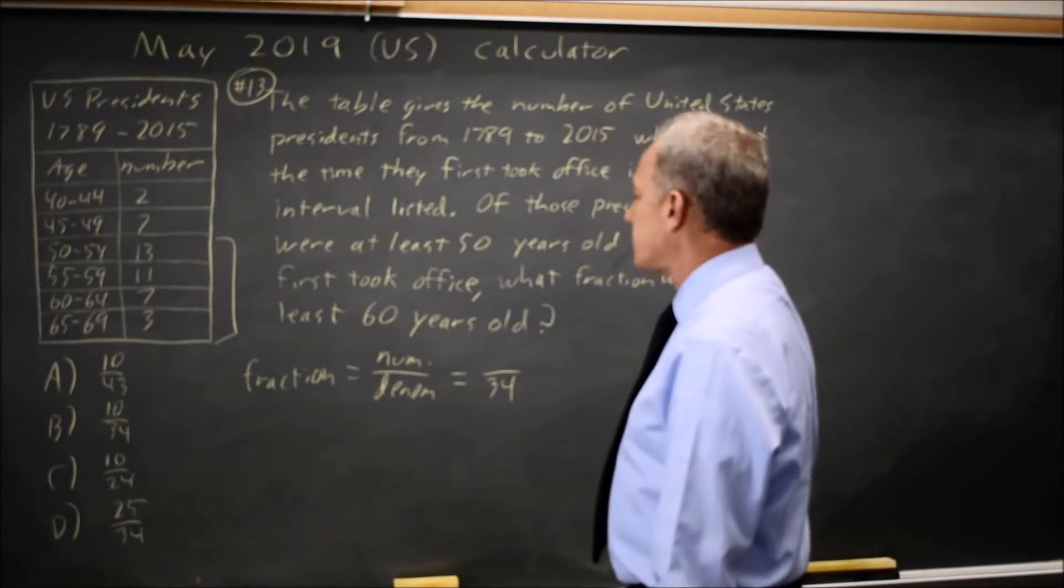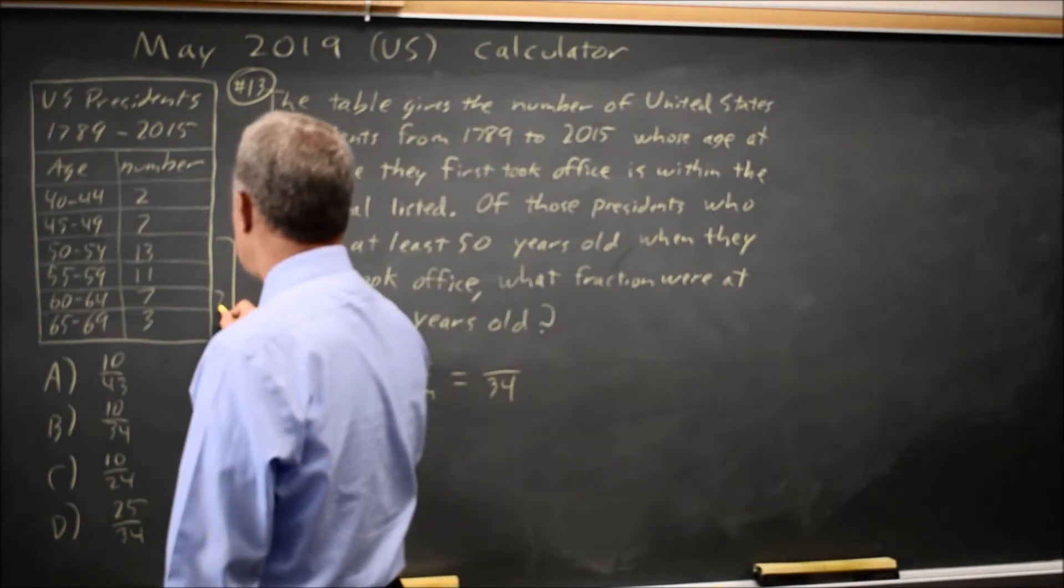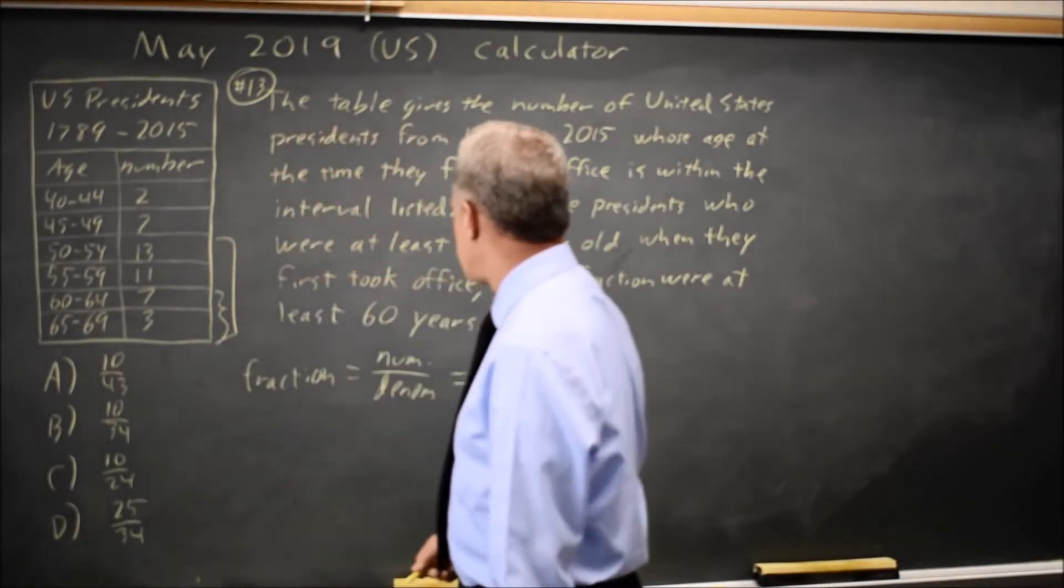Now of those, what fraction were at least 60? At least 60 would be these last two groups, 7 plus 3 is 10.